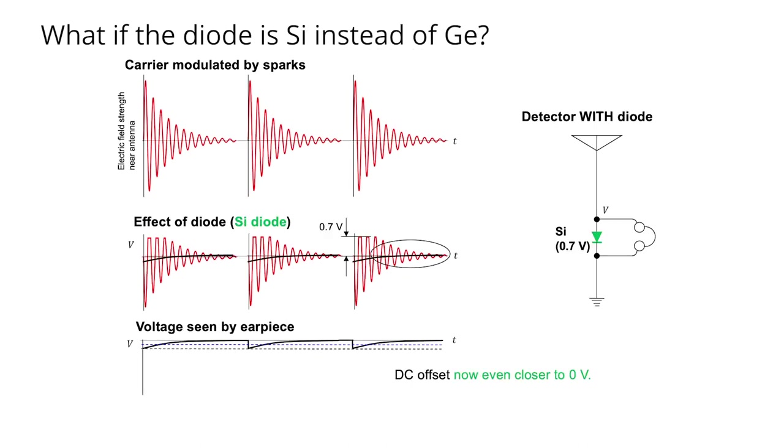If we then move to a silicon diode, we can see that 0.7 volts is necessary to get the silicon diode to turn on. That's worse still. And it starts to approach the situation where we have no diode at all.